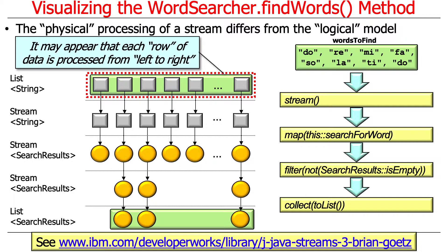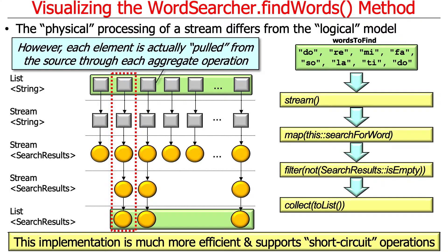One important thing to note — and we'll talk about this a number of times — is that the physical processing of a stream differs a little from what I've been describing. I've been making it sound like it goes left to right at one level, then left to right at the next level. It doesn't work like that at all. What it really does is each element in the stream is pulled from the data source through all of the intermediate operations after the terminal operation is hit. Everything starts to run when the terminal operation is hit, and it pulls things through one element at a time, applying all the intermediate operations, then collects things up in the terminal operator.